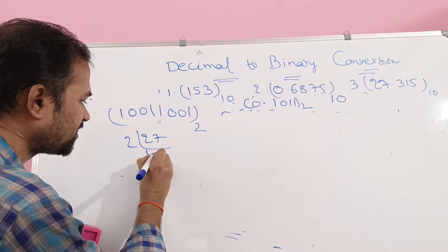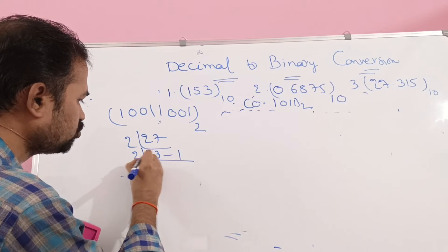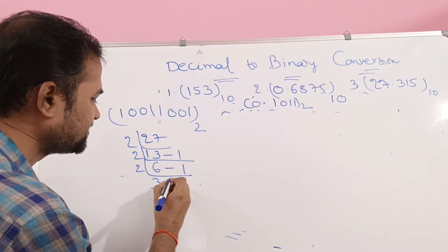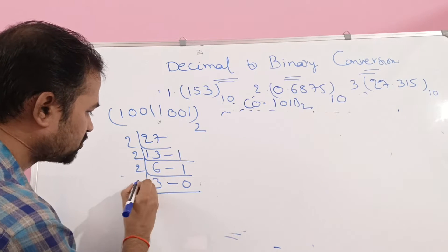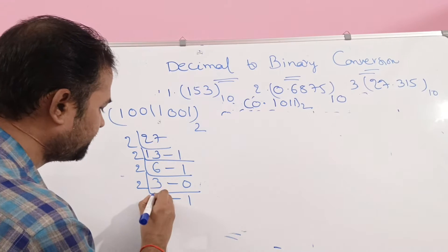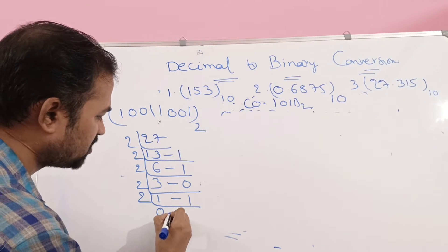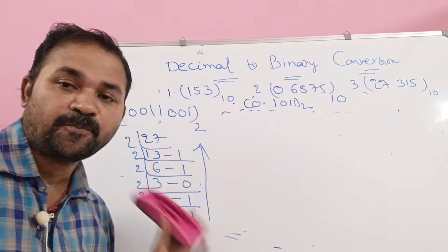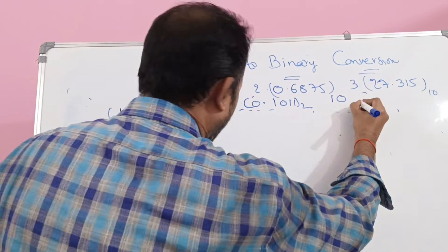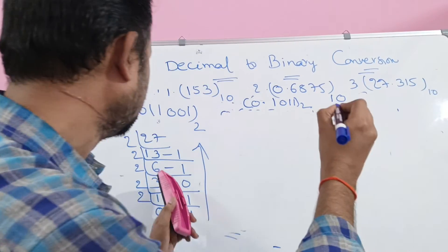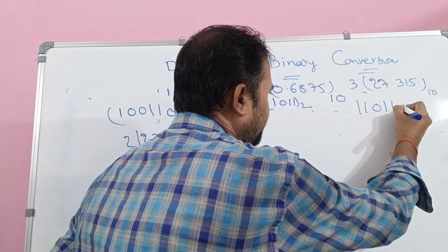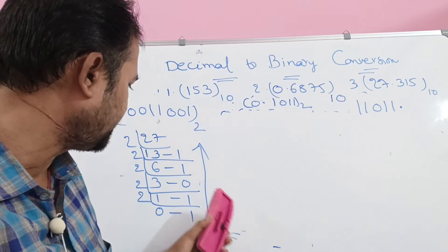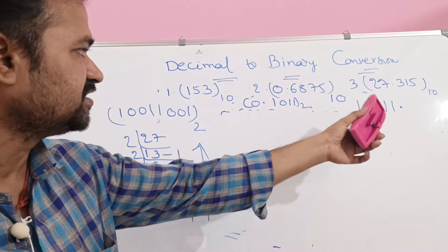Dividing 27 by 2: 2 times 13 is 26, so quotient is 13 and remainder is 1. Next, 2 times 6 is 12, so quotient is 6 and remainder is 1. Next, 2 times 3 is 6, so quotient is 3 and remainder is 0. Next, 2 times 1 is 2, so quotient is 1 and remainder is 1. Next, 2 times 0 is 0, so quotient is 0 and remainder is 1. We got 0, so we stop. Reading bottom to top: 11011.